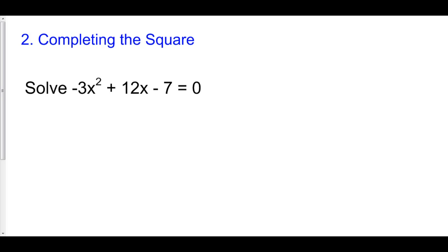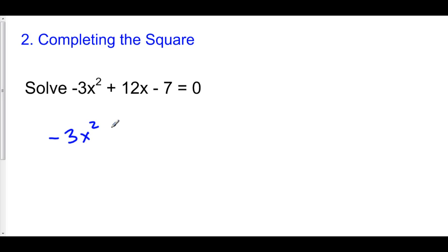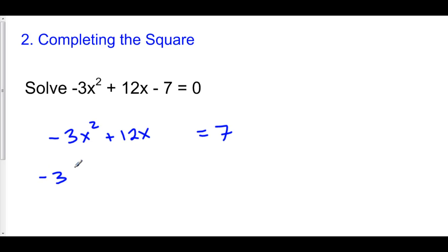If factoring is too annoying but you don't want to use the quadratic formula, you can always complete the square. To do that, step one is move your constant to the other side. So here we have negative 3x squared plus 12x equals 7. We can only complete the square if the coefficient of x squared is 1, so we need to factor out the negative 3. Here we have negative 3 times the quantity x squared minus 4x, equals 7.